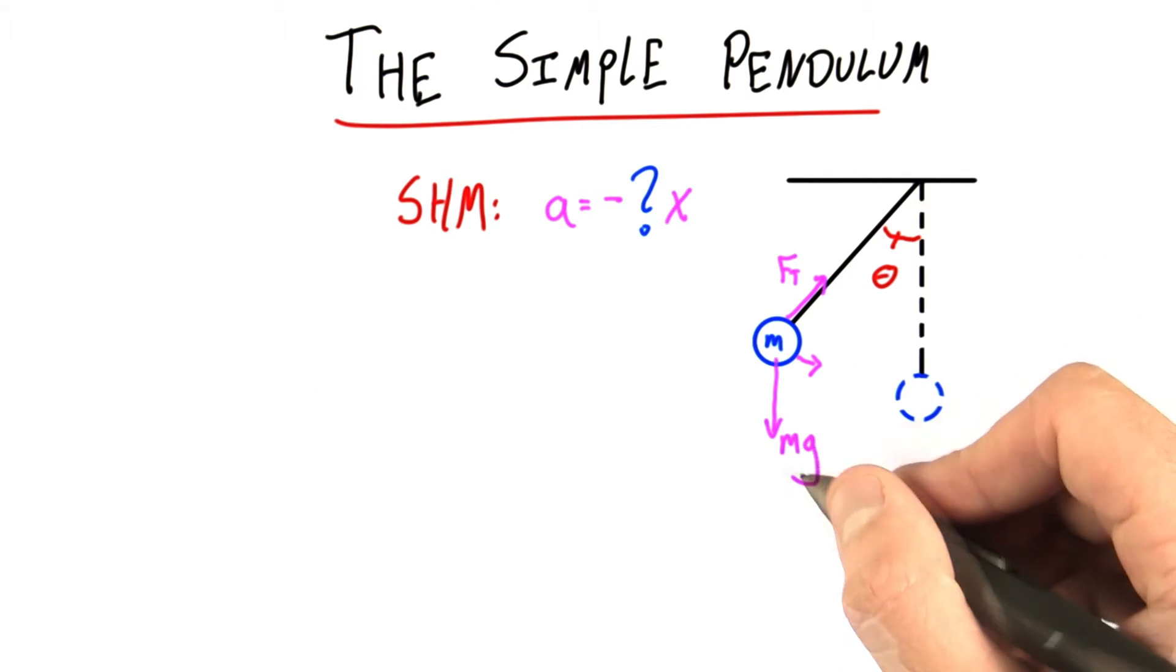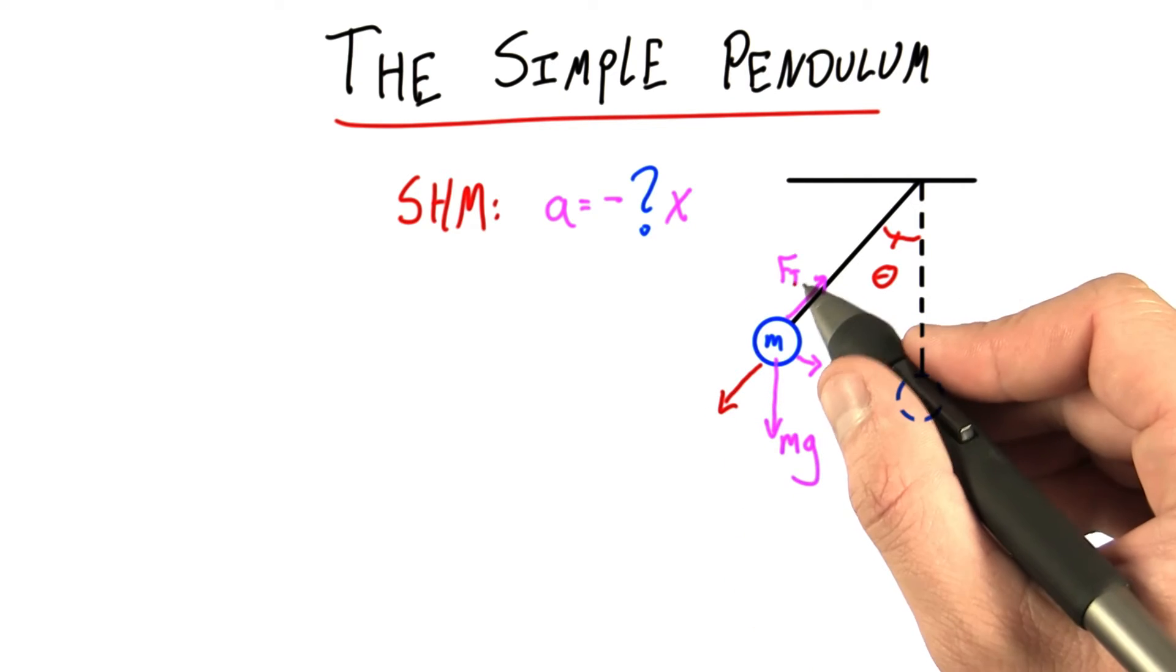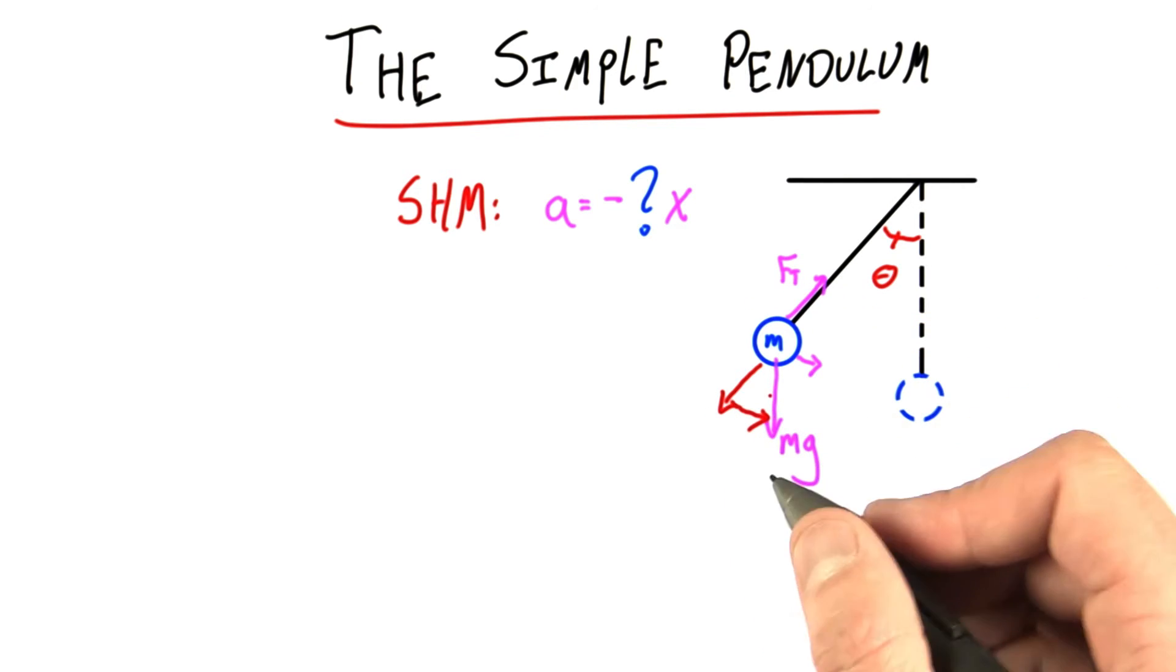So what we want to do is break this mg into a component this way that will balance the tension and a component in this direction.